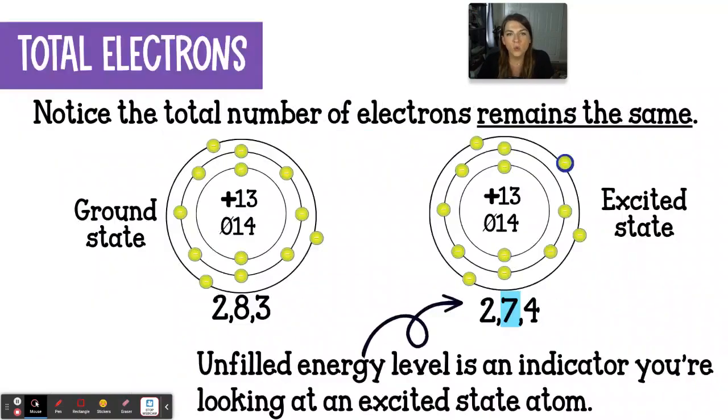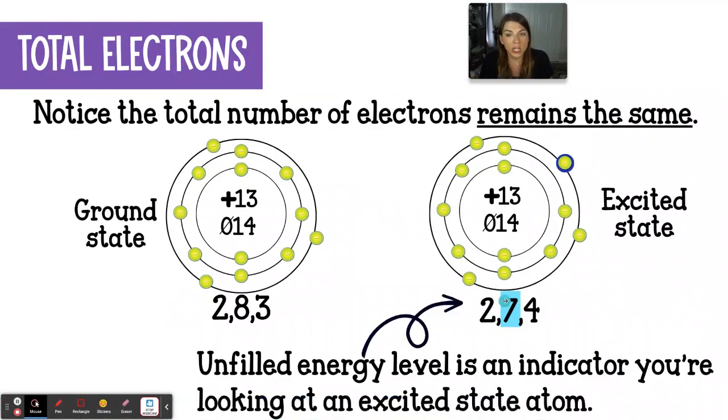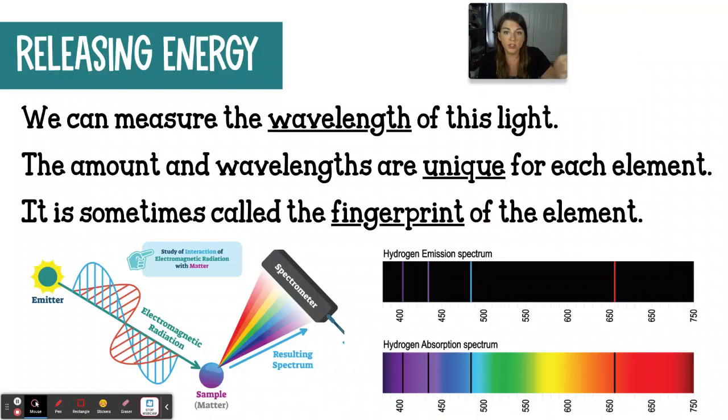When you are looking for excited state, when you're reading configurations, you're looking for an empty or an unfilled shell or energy level, because that's going to tell you that the electrons are not behaving the way that they should. They are not following the Aufbau principle, getting as close to the nucleus as possible. The excited state is a temporary state, they will eventually lose energy and have to go back to ground state. Electrons live in the ground state 99.999% of the time. When they return to the ground state is when they emit energy in the form of light.